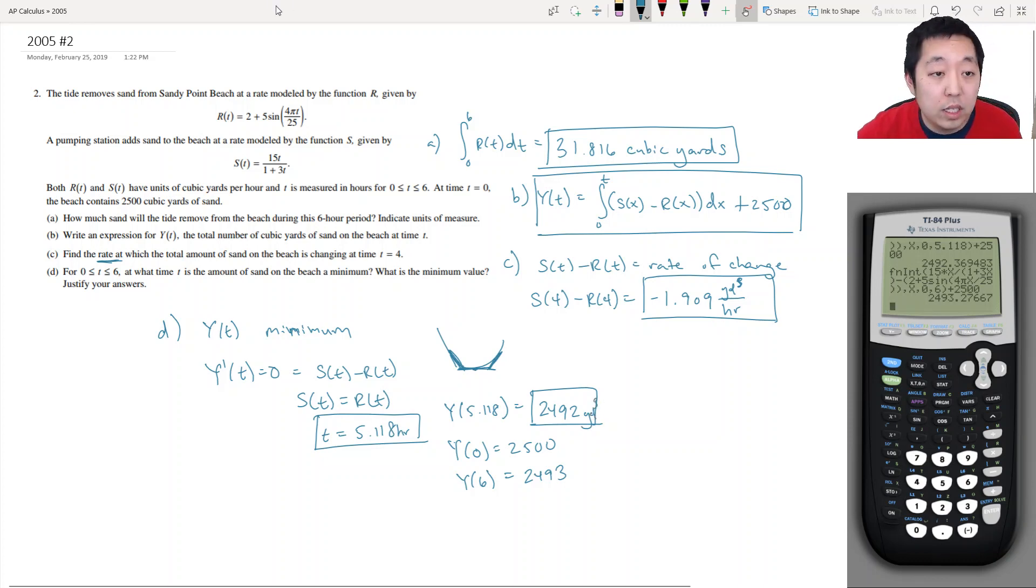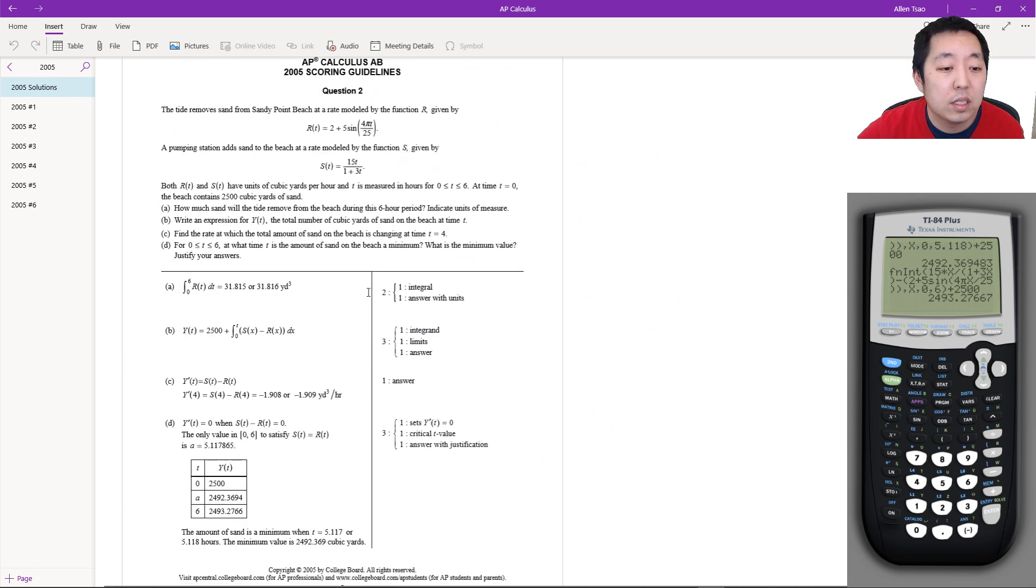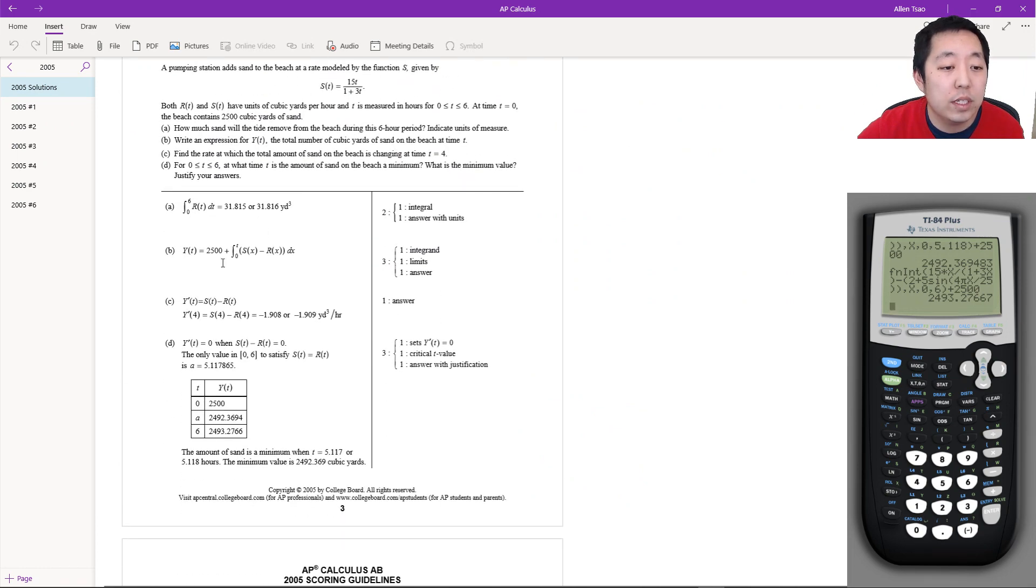So let's take a look. 31.816, 2500 plus integral S of X minus R of X. Y prime is negative 1.909. And we checked 0 and 6. So it's 5.118 at 2492.369, which is what we got. So I hope you found it helpful. I'll see you in the next video.